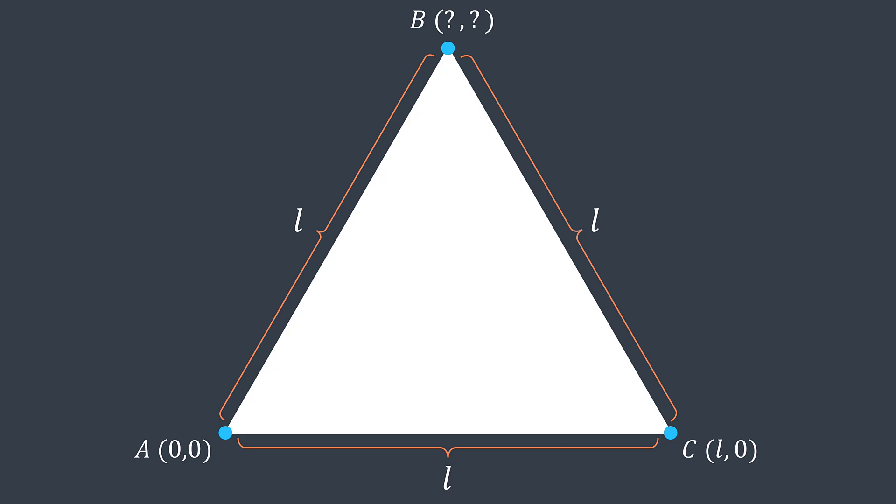And for B, the x is in the middle between A and C. So x is L divided by two. And for the y, we know that an angle is 60 degrees. So we can calculate sine of 60 degrees, which is square root of three divided by two, and multiplied by L. We can say that y is square root of three divided by two times L.